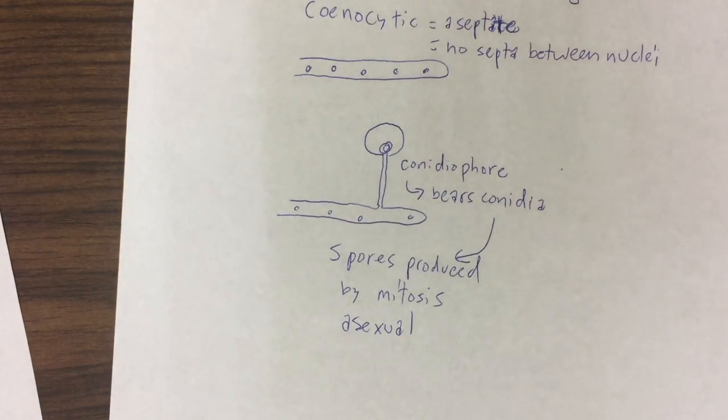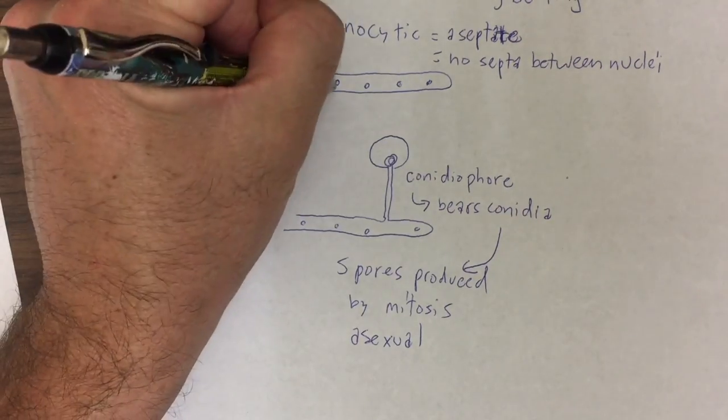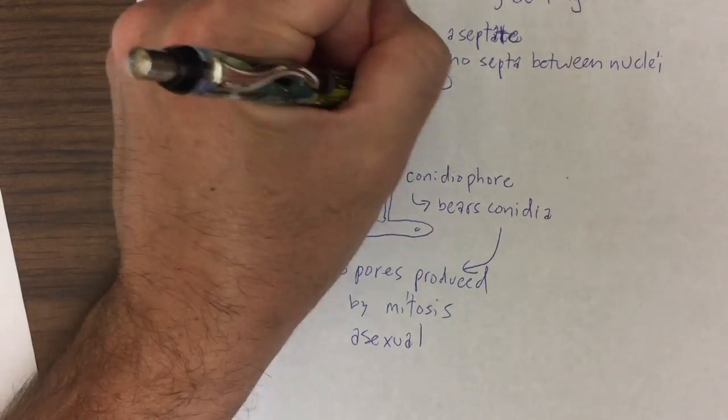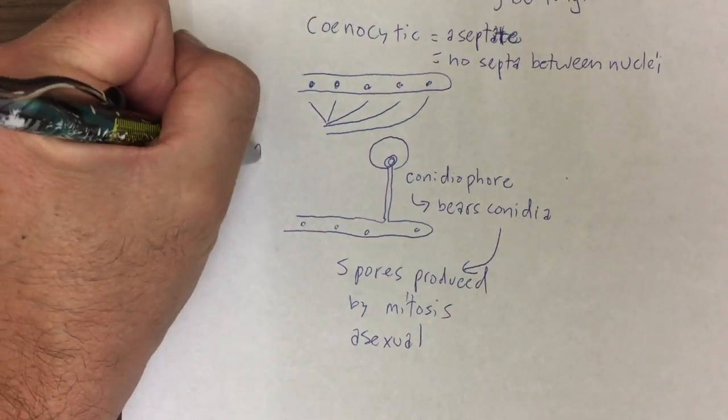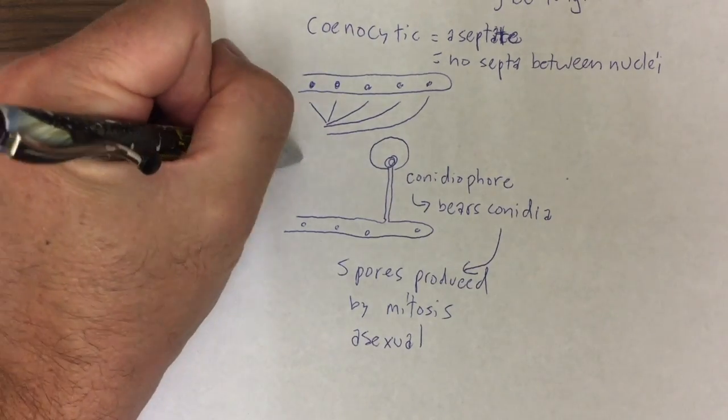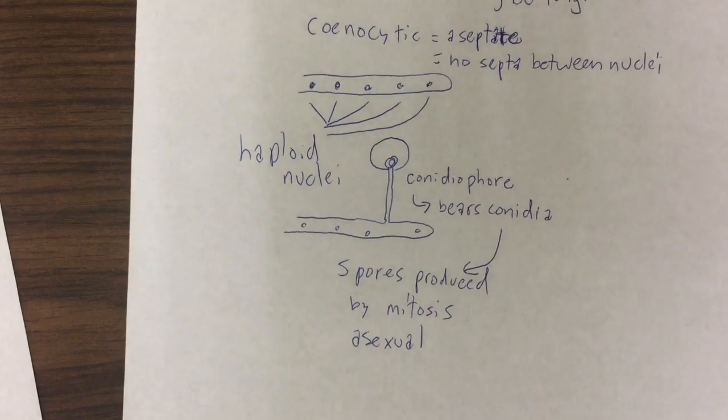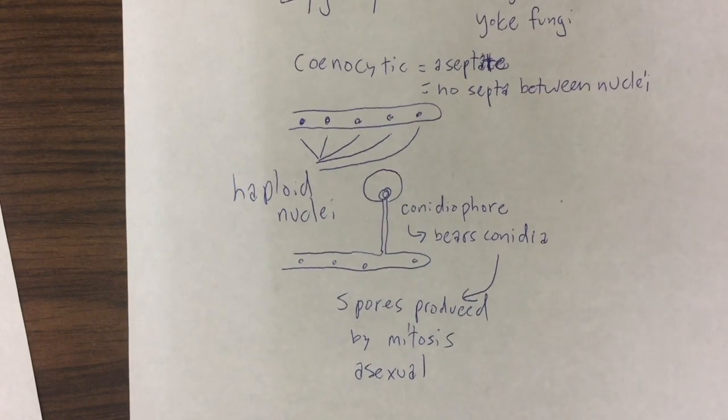So they're asexual spores. And because these are fungi, all of these nuclei in here are haploid, and the organism is haploid throughout most of its life.